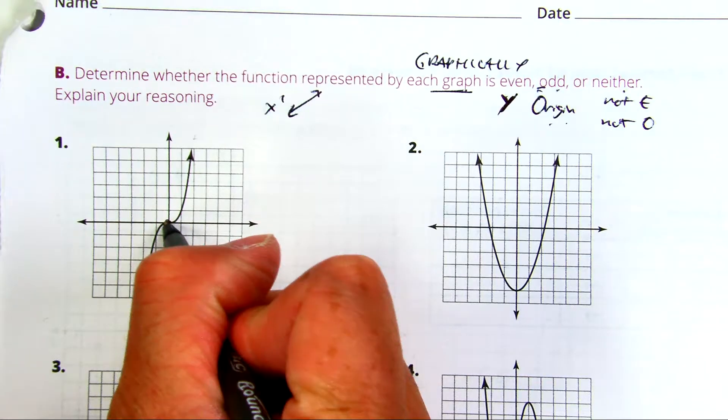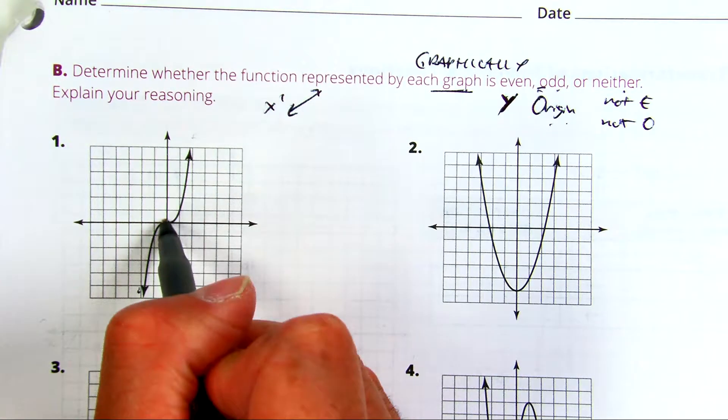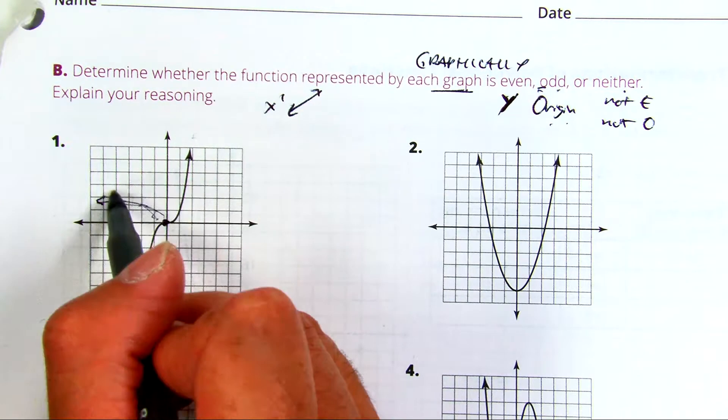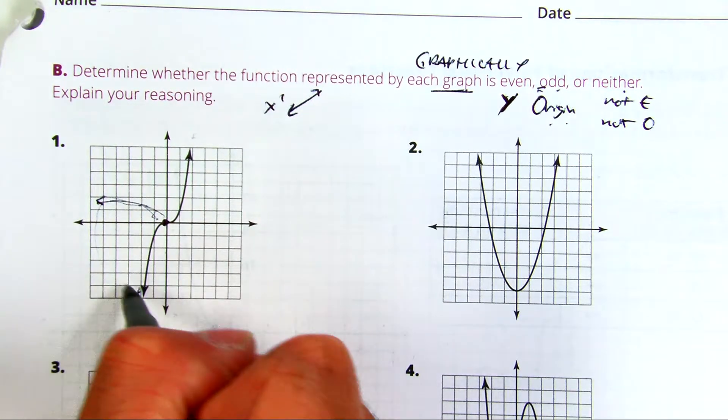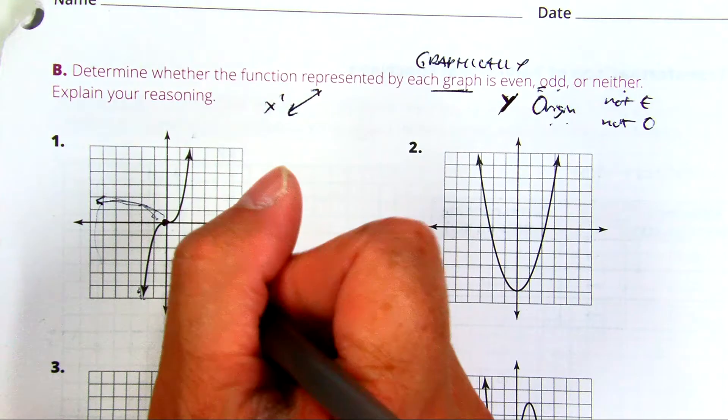And it looks like I do have that point at the origin, and I can rotate this. Maybe this is what it would look like, rotated 90 degrees counterclockwise. And if I rotate another 90 degrees, it would go down here. So the answer for this one is odd.